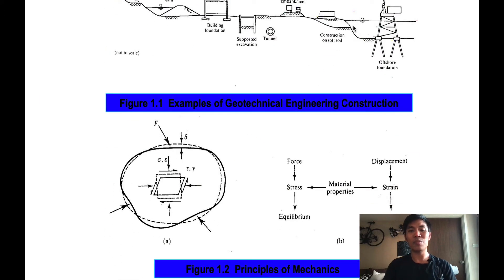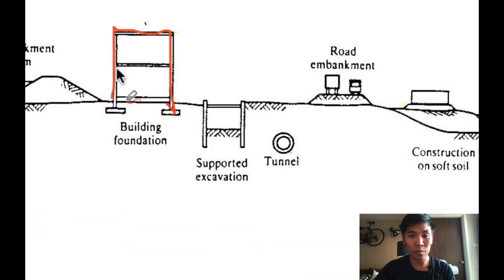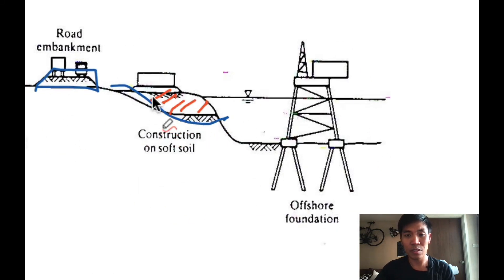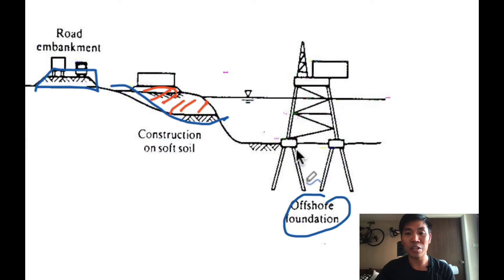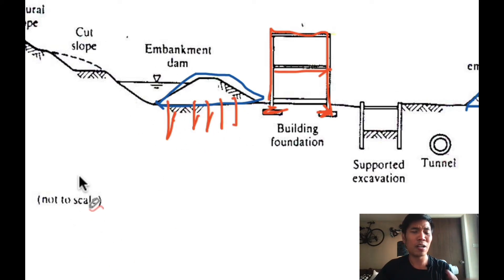Let's make some conclusions about the structures for which we have to design foundations. The first is the building — we should have a foundation. We construct a road, a road embankment, or a slope. Or if you want to construct something offshore, we call that offshore foundation with pile foundations. Or if we construct a dam, we increase the load on the ground — we have to check the stability and the deformation.